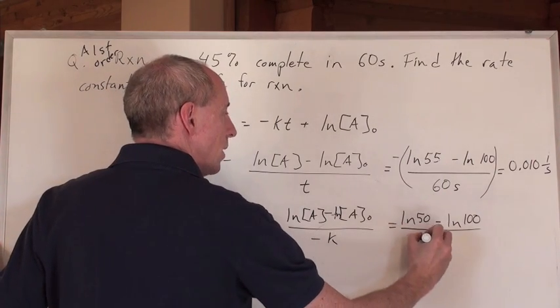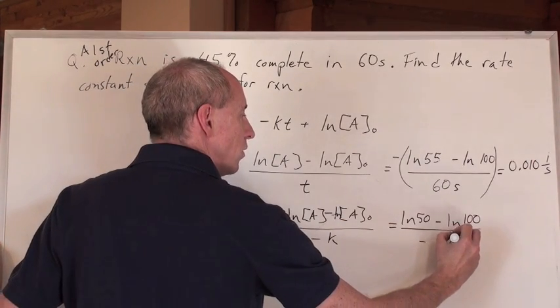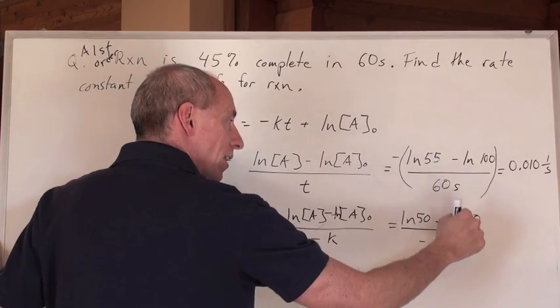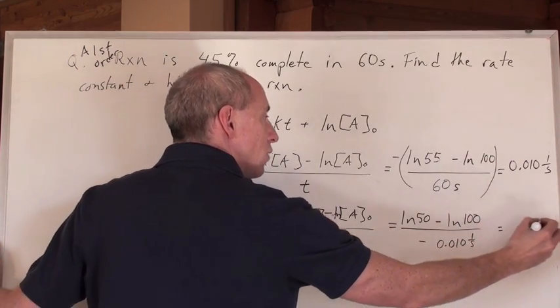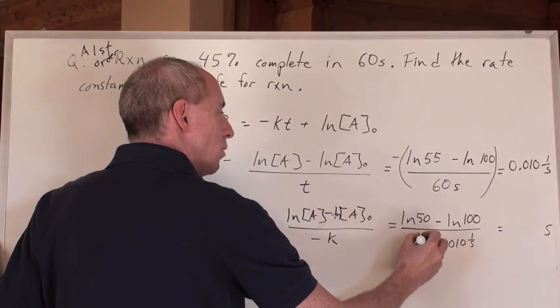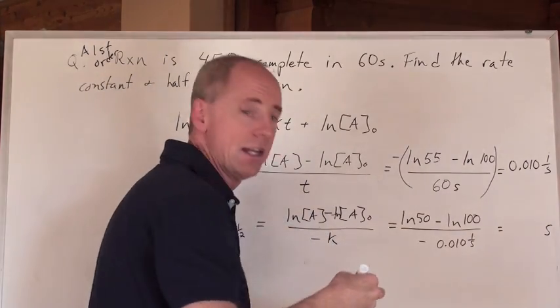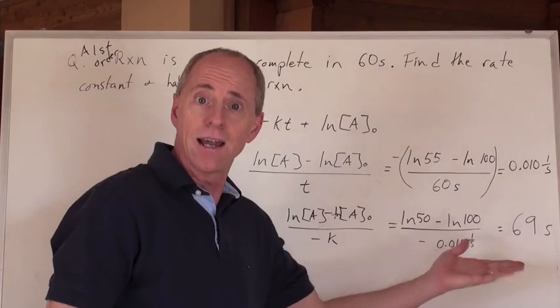What's your rate constant? It's going to be 0.010, one over seconds. And that number divided by one over seconds is going to give you seconds in the end. You have to make that a negative K, so it's negative that number. When you punch all of that in, you get 69 seconds.